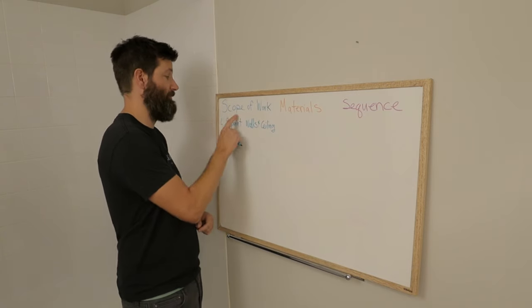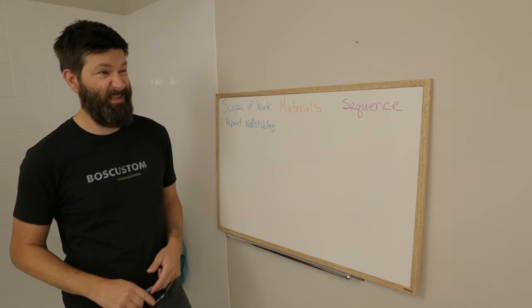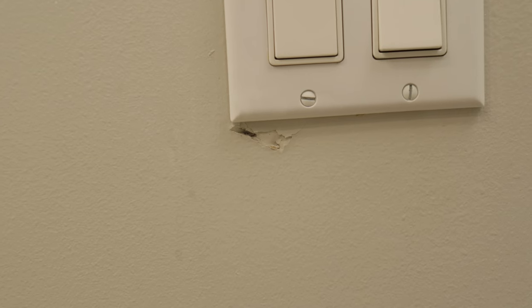So the first item up on the scope of work is to repaint the walls and the ceiling. We're going to be changing the wall color, fixing any imperfections, and the ceiling has a bit of damage that we're going to repair and then repaint.